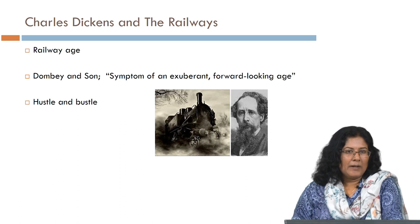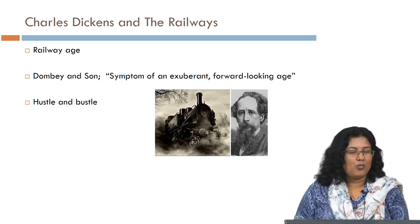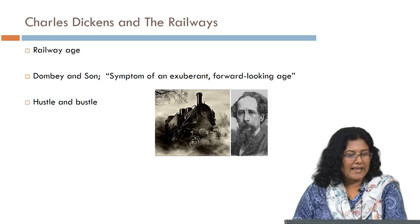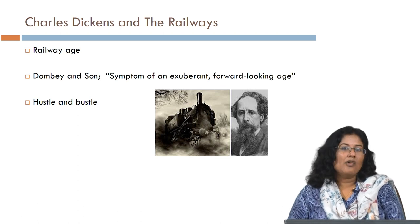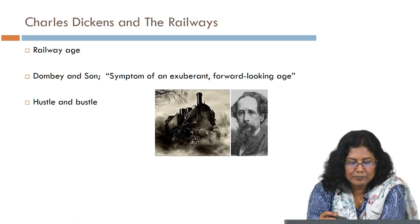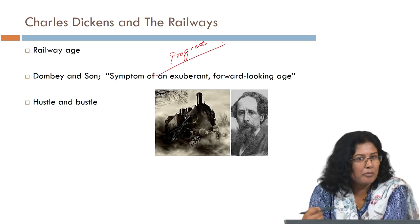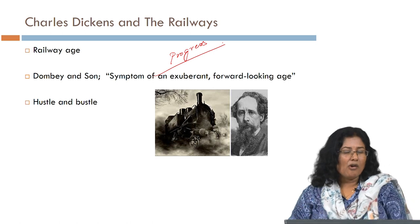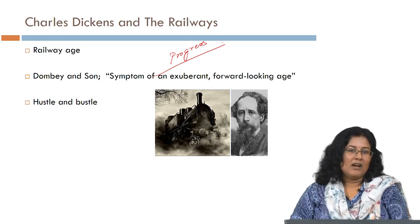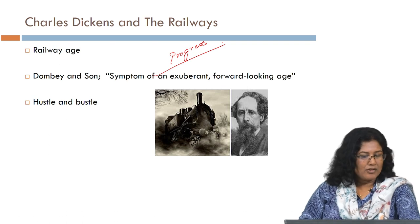Dickens does capture the imagination associated with the railway age in his work, especially in his fiction Dombey and Son, where the railways come to represent an exuberant, forward-looking age associated with progress. It indirectly celebrates the technological advancement of that period — there is a lot of hustle and bustle, sound and noise linked to the railway transport network.